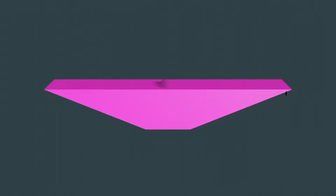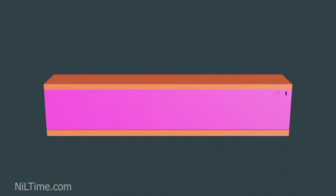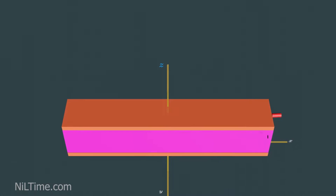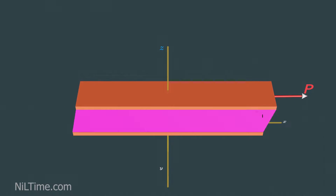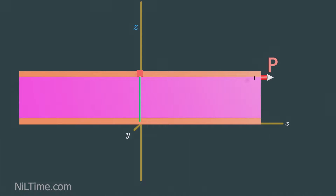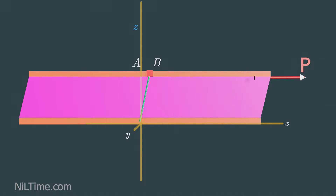Consider a hypothetical experiment in which a material is placed between two very wide and large parallel plates. If a solid, such as steel, were placed between the two plates and loaded with the force P, the top plate would be displaced at some distance and the material will change its shape. As you can see, the red point changes its initial location from point A to point B. If it deforms by the angle gamma, then this angle is called shearing strain, which is usually measured in radians.